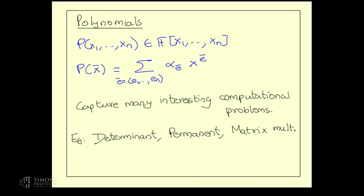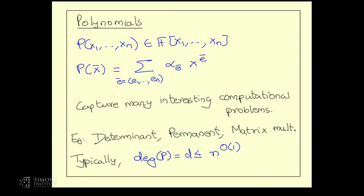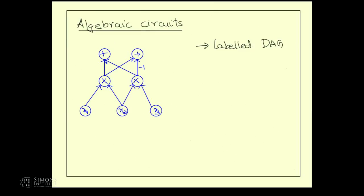The determinant is of course a multivariate polynomial, the permanent is a multivariate polynomial, and matrix multiplication is a collection of multivariate polynomials. All of these can be captured in this general language. Throughout the talk, I'm only going to be dealing with polynomials whose degrees are somewhat small. The degree is an important parameter, and this entire theory is built around polynomials whose degrees are themselves polynomial. The determinant, permanent, etc., all definitely have this feature.